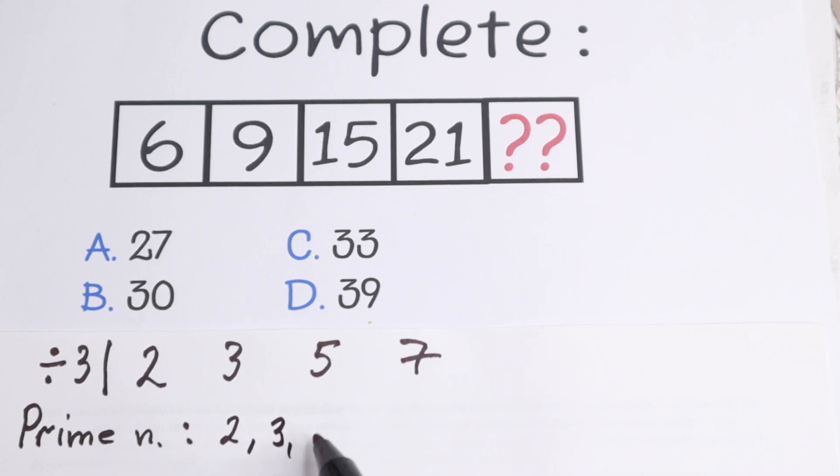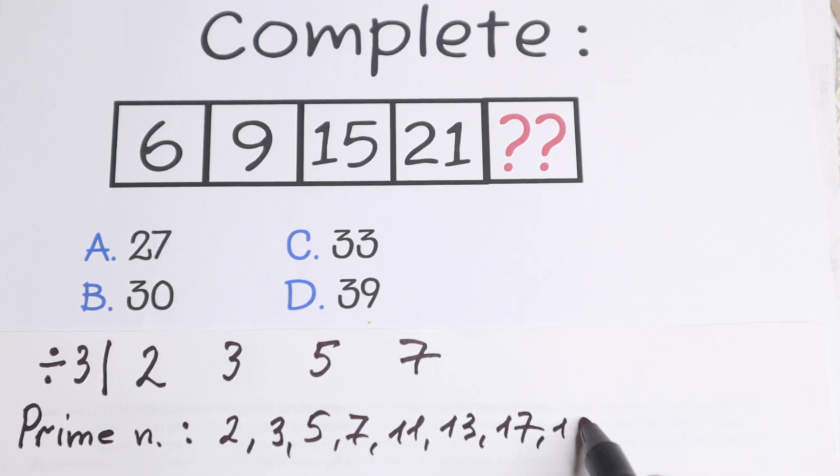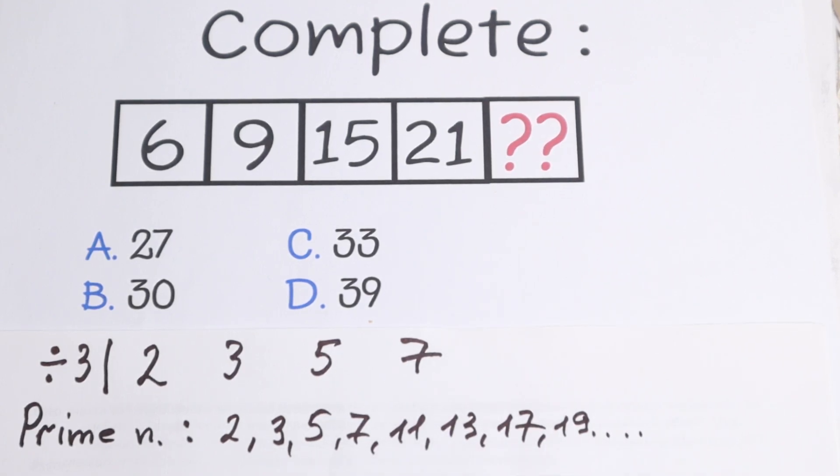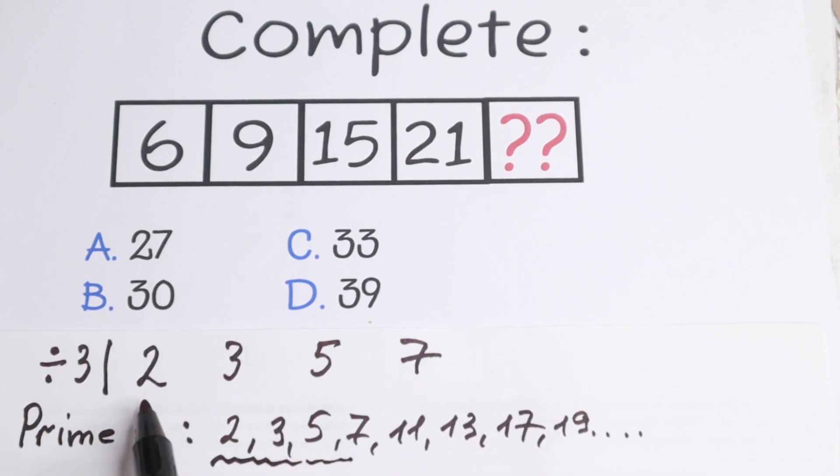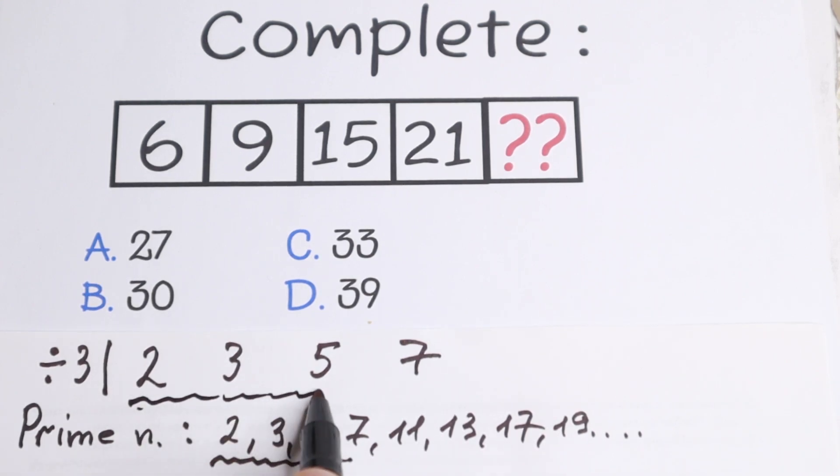So why write about these prime numbers? Because if we look closely, we have 2, 3, 5, 7. And this is the same as right here. We have 2, 3, 5, 7.